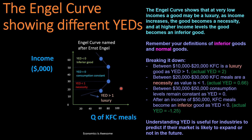Between $30,000 and $50,000, consumption levels are constant and YED equals zero. Then after an income of $50,000, KFC meals become an inferior good as the YED is less than zero — if you calculate the actual YED it comes out at negative 1.25. Understanding YED is useful for industries to predict if their market is likely to expand or not in the future.